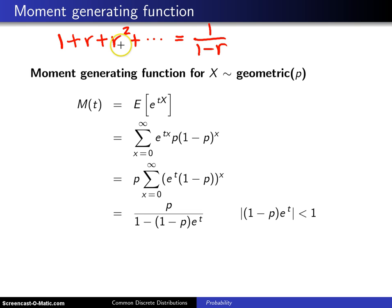So 1 plus r plus r squared, etc., is equal to 1 over 1 minus r, and that is true whenever the absolute value of r is less than 1.